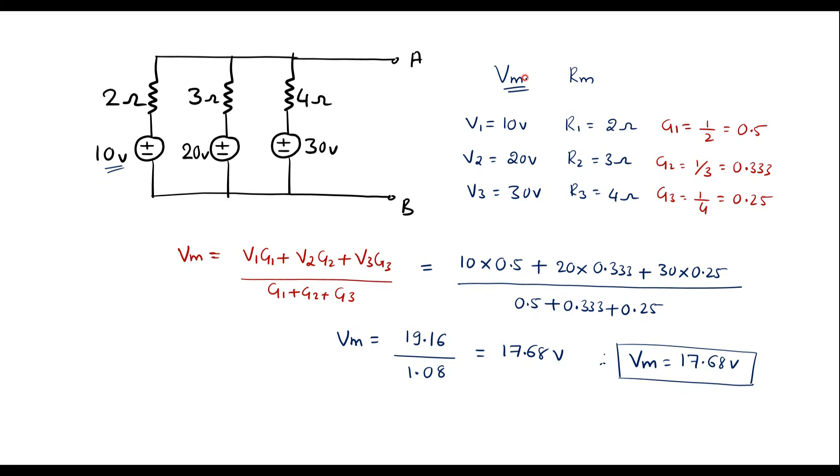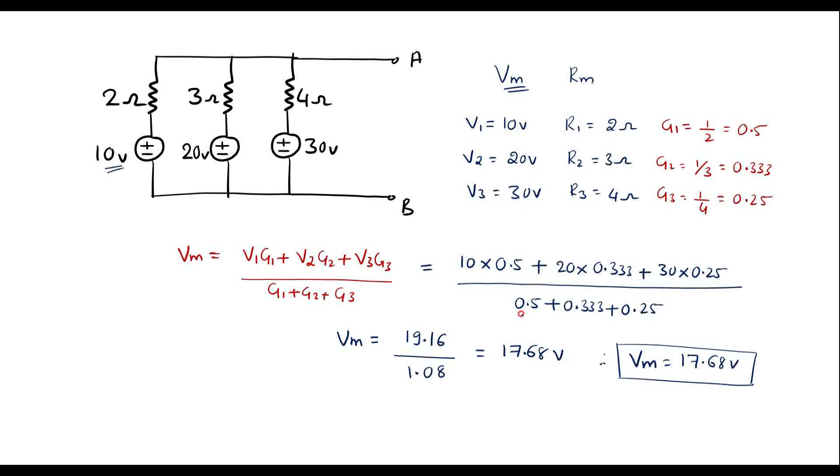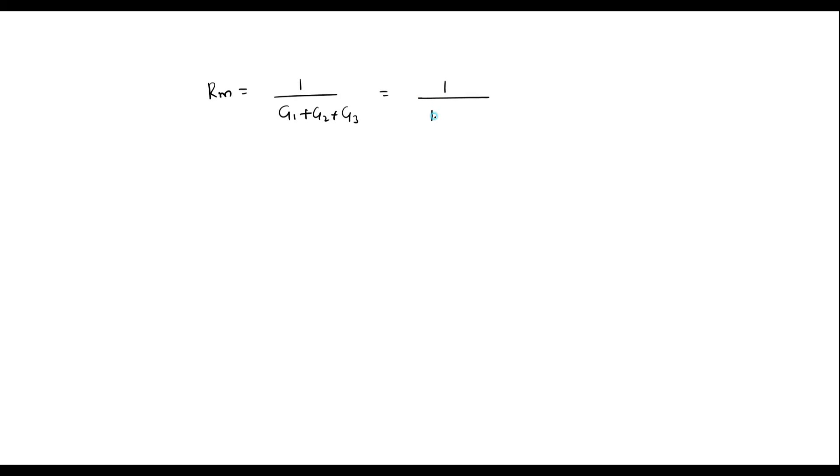Thus we calculated Vm. Now let us calculate Rm. Millman's resistance can be calculated as 1 upon G1 plus G2 plus G3, that is equal to 1 upon 1.08. It gives 0.925 ohm.